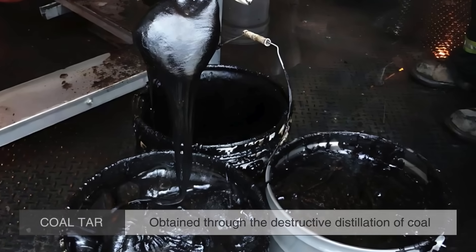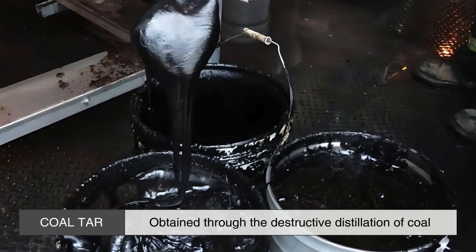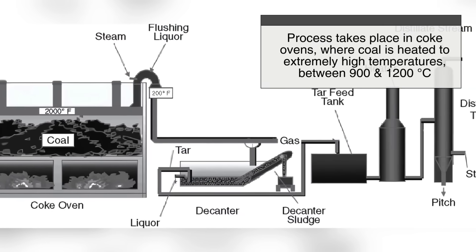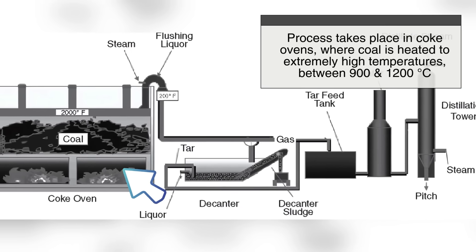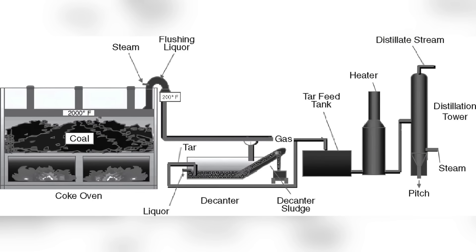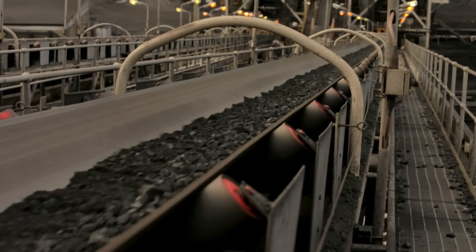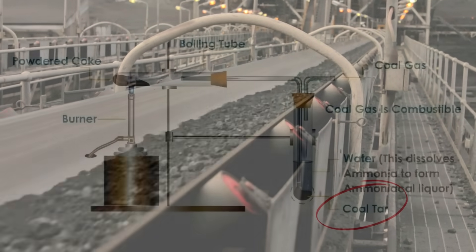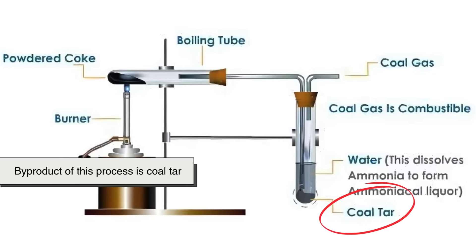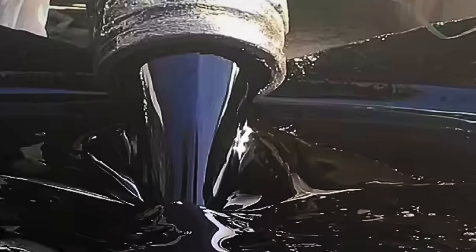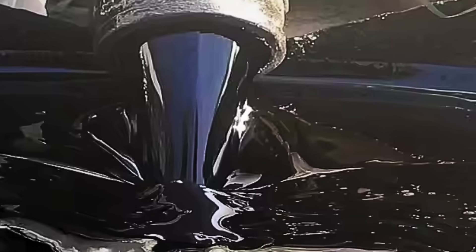Another major source of tar is coal tar, which is obtained through the destructive distillation of coal. This process takes place in coke ovens, where coal is heated to extremely high temperatures, typically between 900 and 1,200 degrees Celsius, in the absence of oxygen. The goal of this process is to produce coke, a crucial material used in steelmaking, but a byproduct of this process is coal tar. As the coal breaks down under heat, it releases volatile gases and liquids, which are collected and condensed.